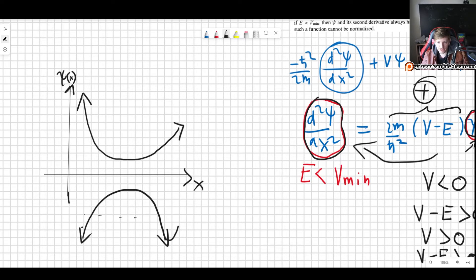For this to go to zero, you would need something like this. But that would imply that there is some x in which you have a change of signs. But we know that that doesn't happen. The energy is smaller for every single x. So this is not possible.